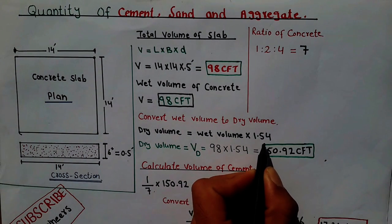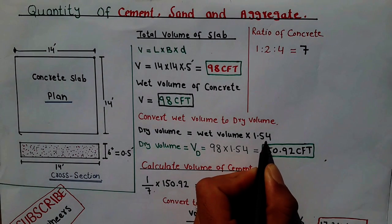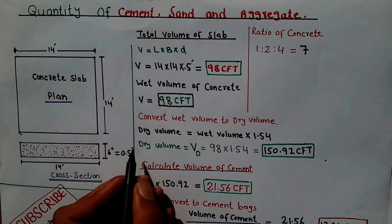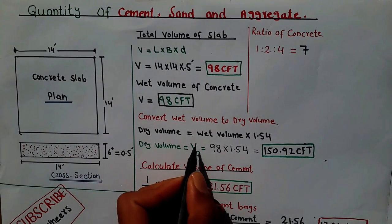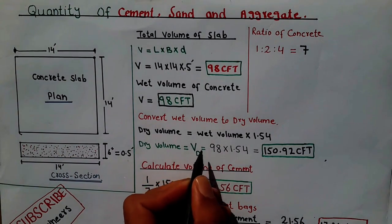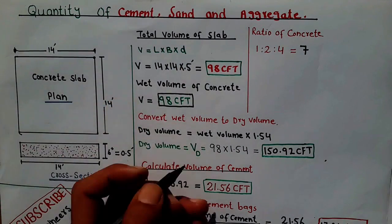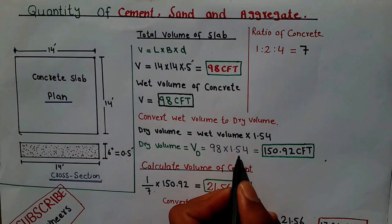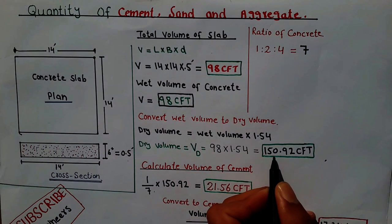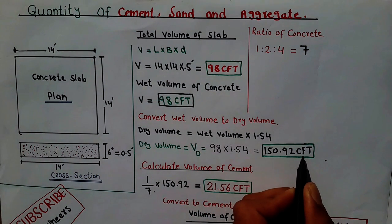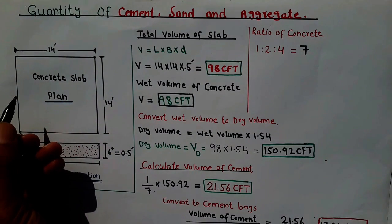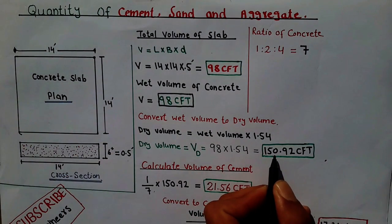Dry volume is equal to wet volume multiplied by 1.54. This is a constant value — I will try to make another lecture explaining what 1.54 means. So dry volume V_D = 98 CFT × 1.54, which gives you 150.92 CFT. This is the dry volume for this slab — we have to bring dry material equal to this volume of 150.92 CFT.